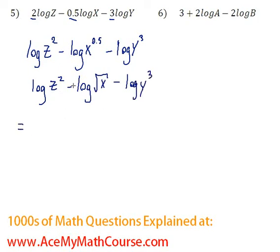Now we're subtracting logs so we can divide the contents. So we get log z squared over root x minus log y cubed.